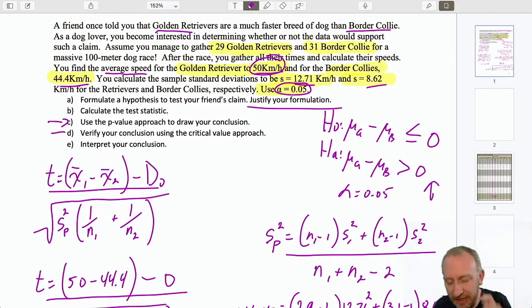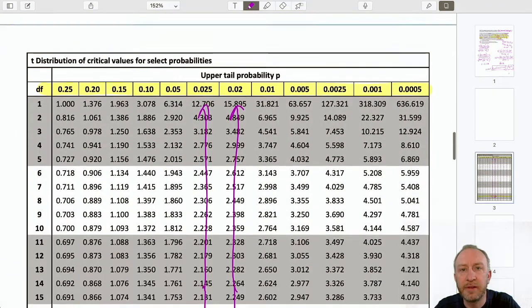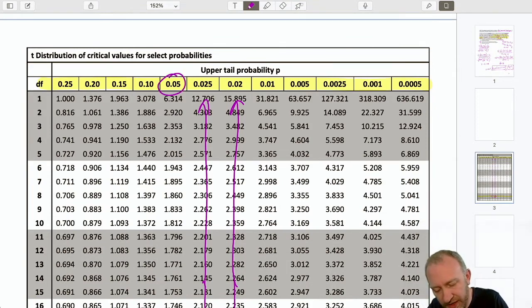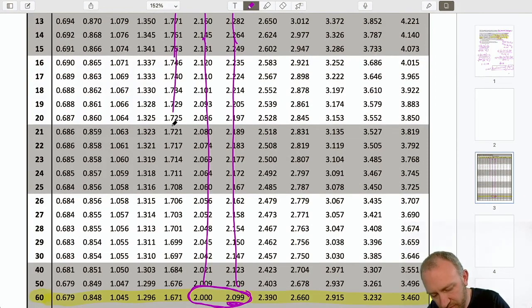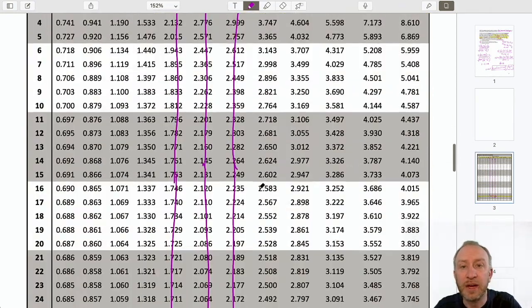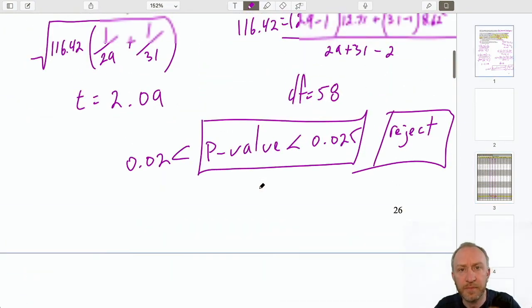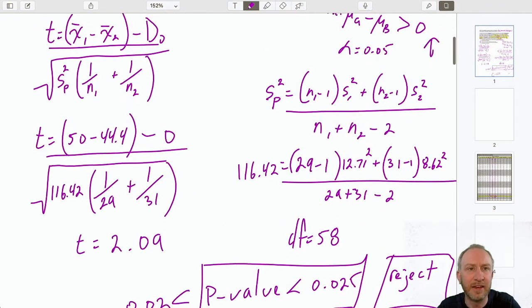Now, before we get into that interpretation, what is our critical value? Come back down here. Alpha was 0.05. And, we're coming down to... Again, we're using 60 degrees of freedom instead of 58, just because that's our closest value. And so, that was 1.67. So, that critical value for 0.05, that's technically 60 degrees of freedom, is 1.671.